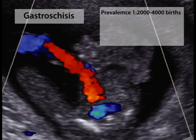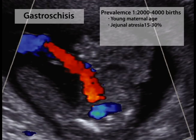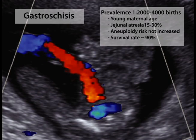Gastroschisis complicates one in 2,000 to 4,000 pregnancies and is the one major anomaly more common in infants of younger mothers. Associated bowel abnormalities such as jejunal atresia are found in 15 to 30% of cases. As with other major anomalies, targeted sonography is indicated. Gastroschisis is not associated with an increased aneuploidy risk and the survival rate approximates 90%.